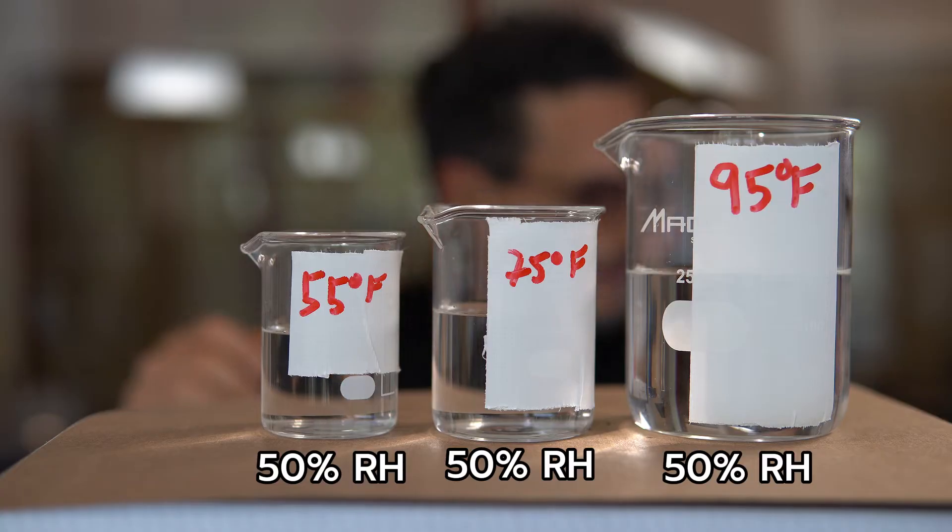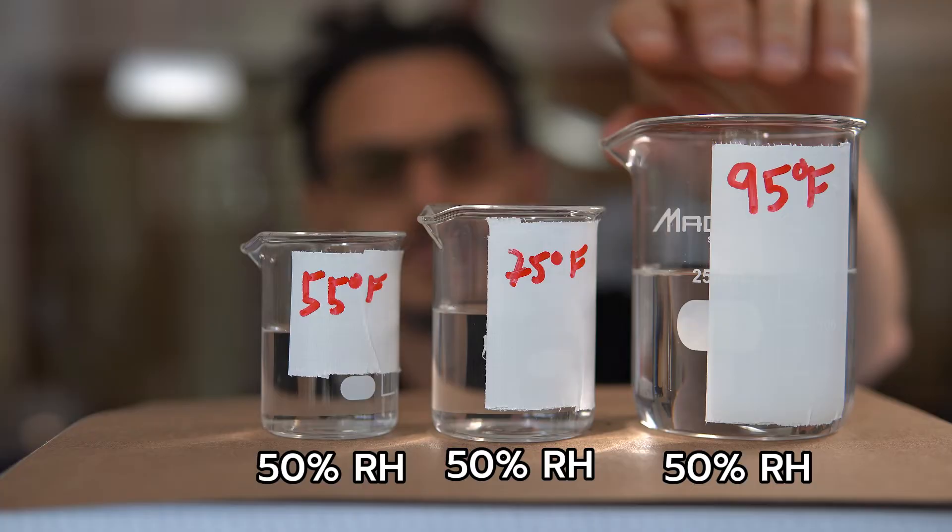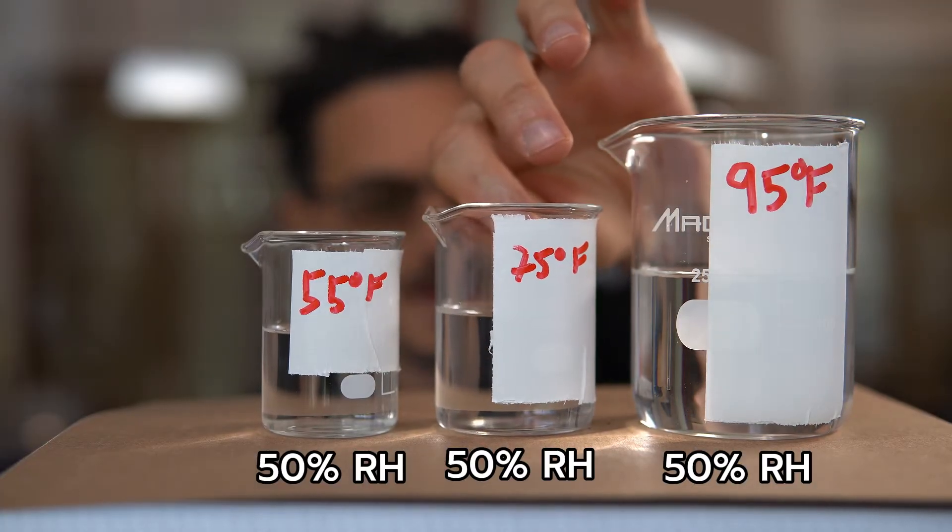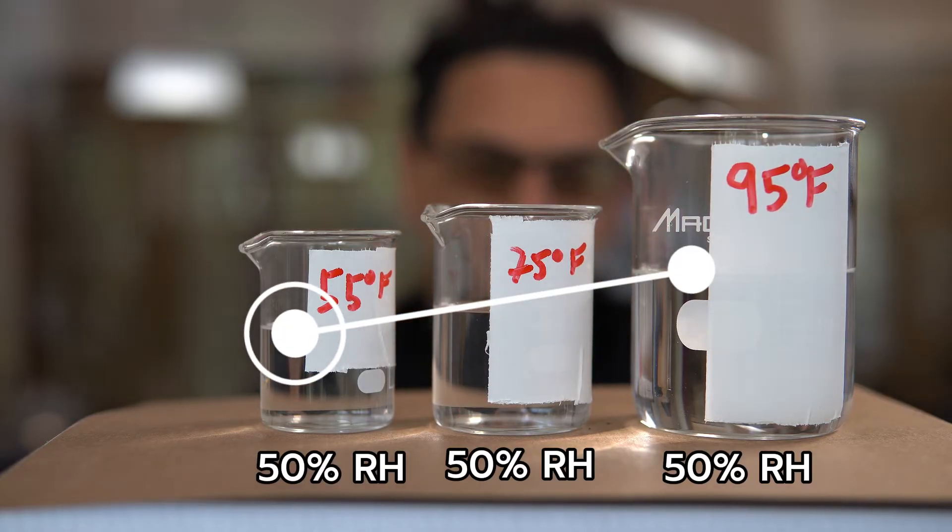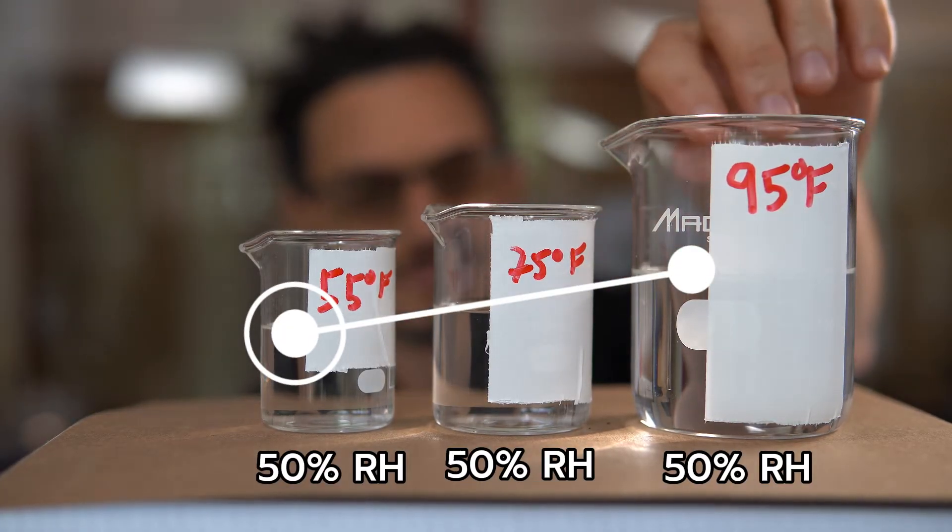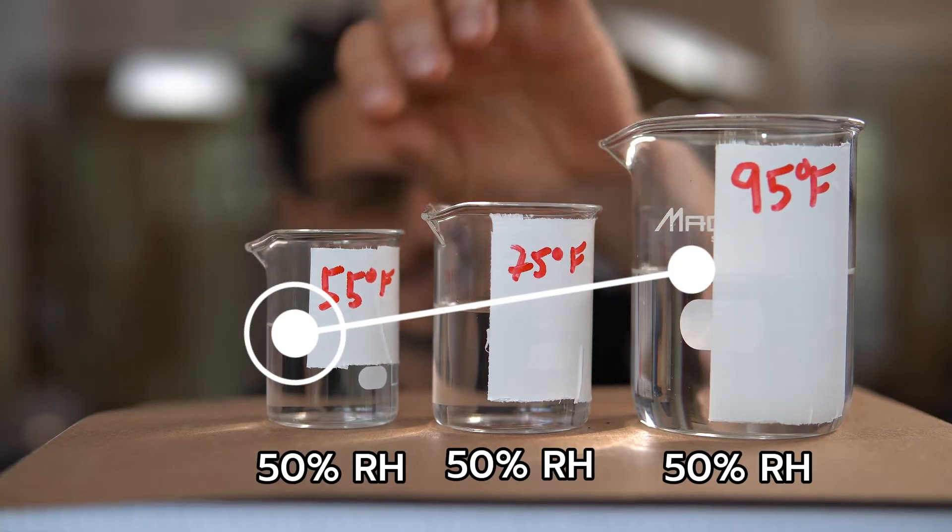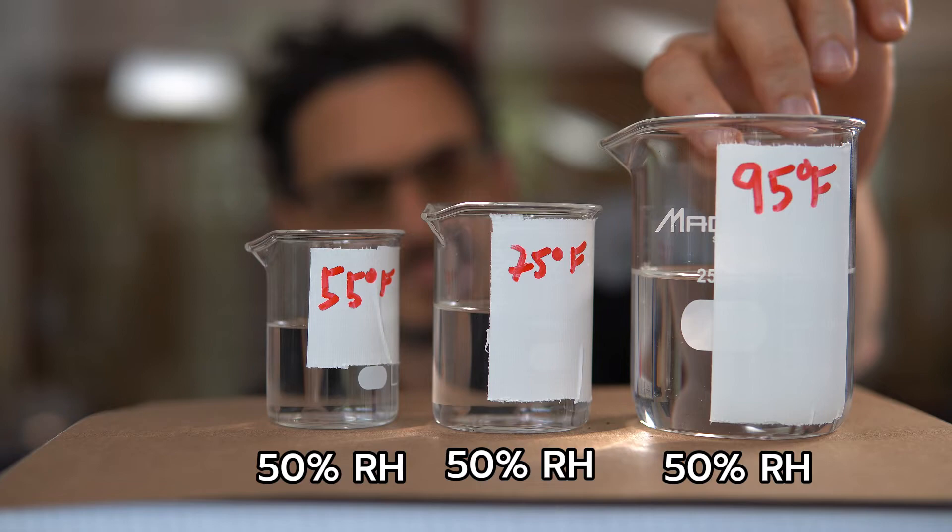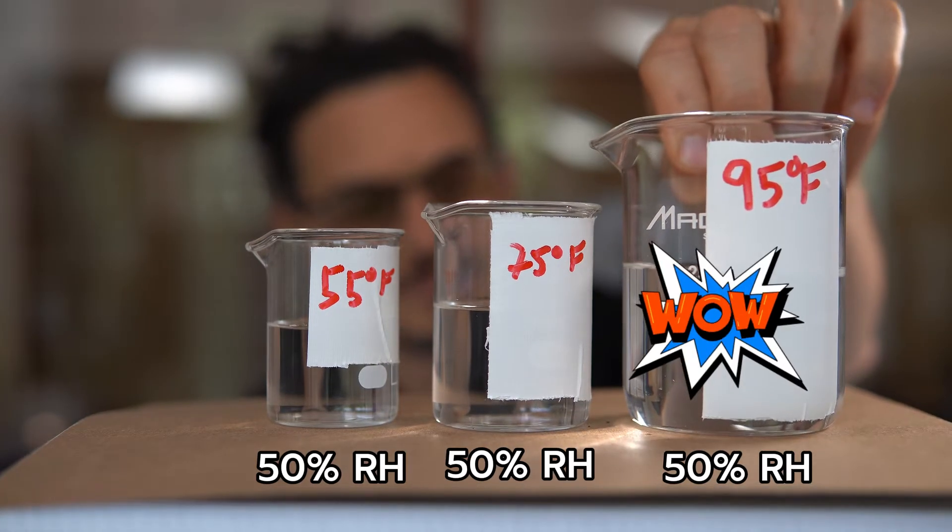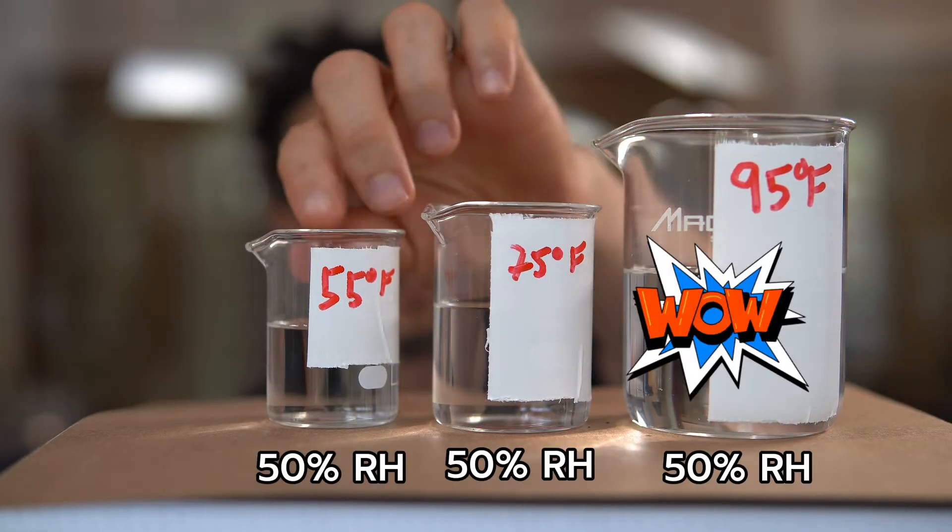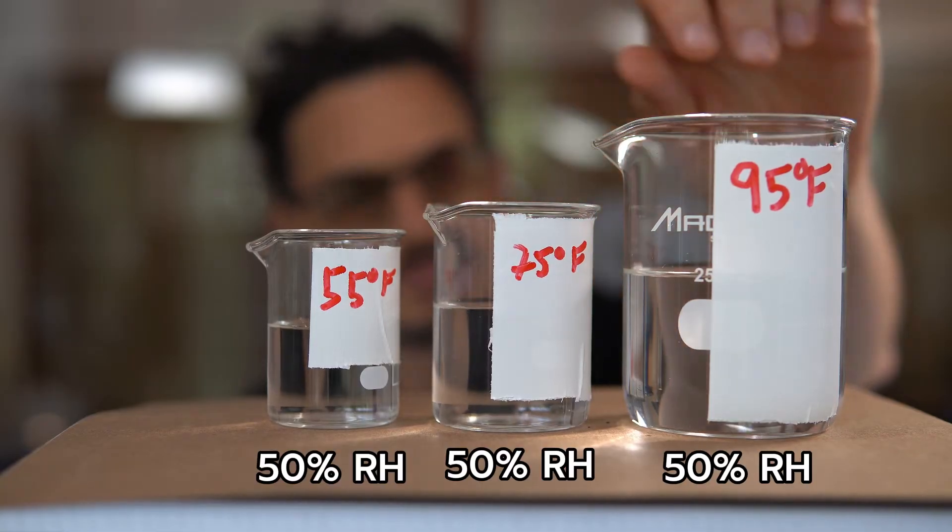All right, so now in these three scenarios, these represent three different air conditions, all of them at 50% relative humidity. So what do you notice? What's the big thing you notice about these conditions? Let's take 95 versus 55. Well, they're both technically 50% RH, but look at how much moisture is in the 95 degree bucket. A lot more moisture. So therein lies the issue when you're using relative humidity to determine how humid it is outside.